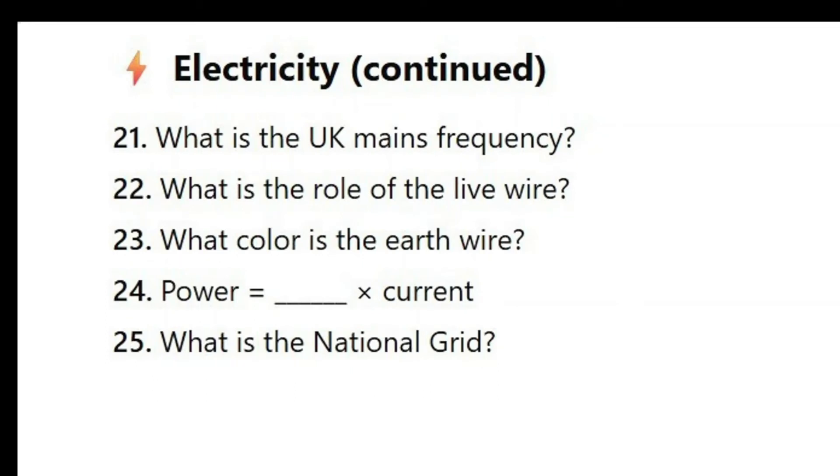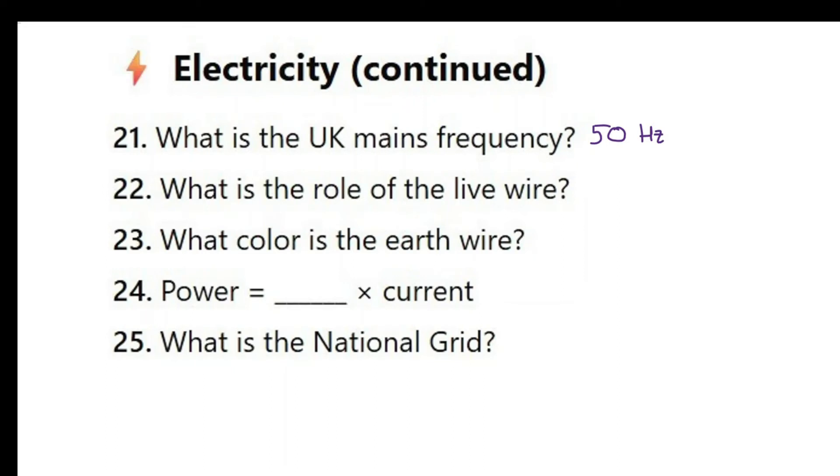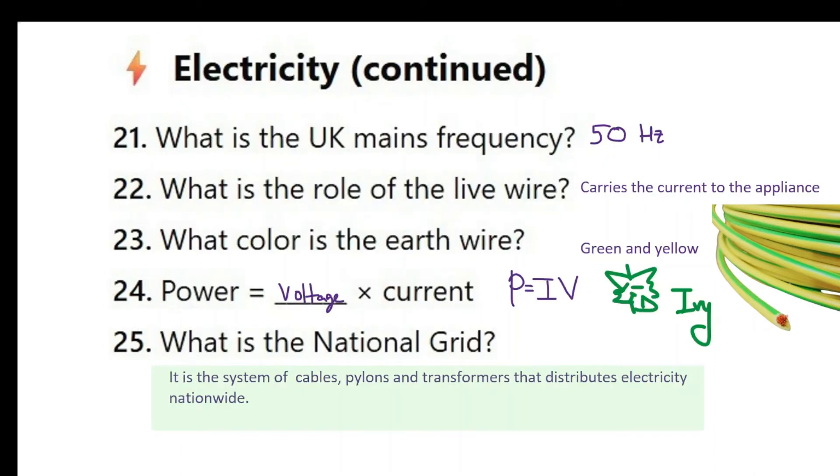Here are the next five questions. Please pause the video and give them a try. When you are ready for the answers, you can press play. The frequency of UK mains is 50 hertz. What is the role of the live wire? The live wire brings the current in. So we can say carries the current to the appliance. What color is the earth wire? It is a green and yellow striped, like you can see here. Power is equal to voltage times current. Now there is an easy way to memorize this one. People memorize this as P is equal to IV, current times voltage. And some people think of this, you know, like an ivy leaf. What is the national grid? The national grid is a system of cables, pylons and transformers that distributes electricity nationwide.